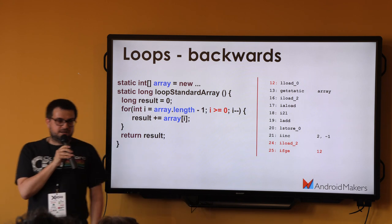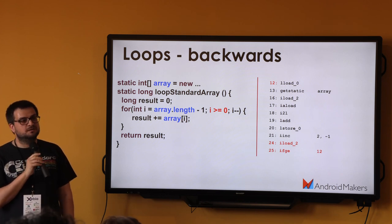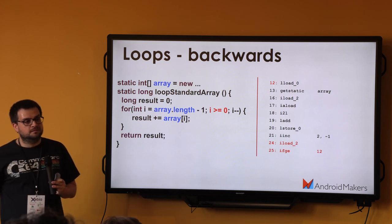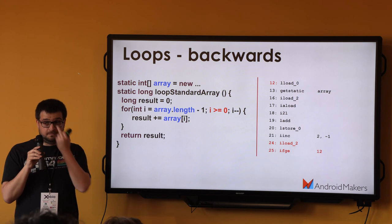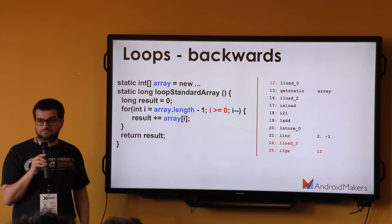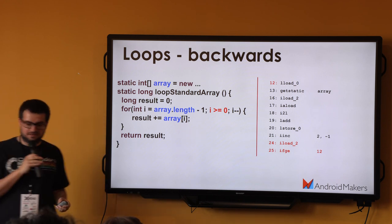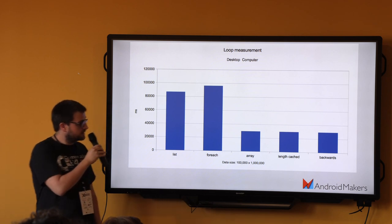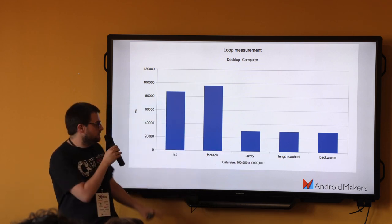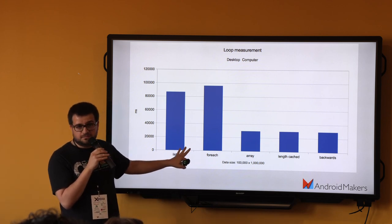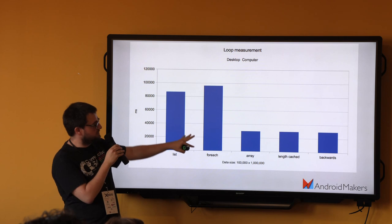But who knows what might be the issue with running an array backwards? Basically you are thrashing the cache. When loading information from the array, it's optimized to look forward. The cache works in chunks — it gets chunks forward, not backwards. Let's see the impact. On a desktop computer, running forwards, caching the length, or running backwards are all about the same. But when using a List or for-each approach it takes about twice as long — all the overhead with object allocation.